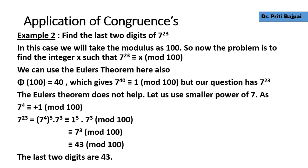Let's take another example: find the last two digits of 7 to the power 23. In this case we take the modulus as 100, so we need to find x such that 7^23 ≡ x mod 100. We can still try Euler's theorem since gcd(7, 100) = 1. We get phi(100) = 40, so 7^40 ≡ 1 mod 100. But our question has 7^23, and 40 is larger than 23, so Euler's theorem does not help us directly.